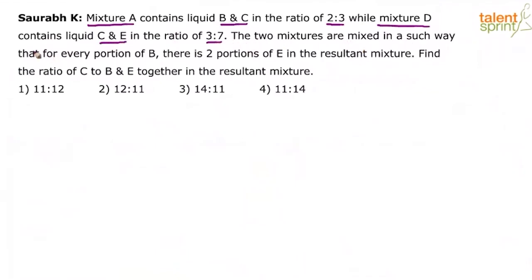The two mixtures are mixed in such a way that for every portion of B, there is two portions of E in the resultant mixture. Basically two mixtures are mixed to form a new mixture, the resultant mixture in which for every single portion of B, we have got two portions of E. Find the ratio of C versus B and E together in the resultant mixture.